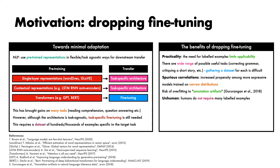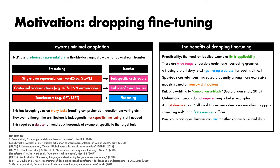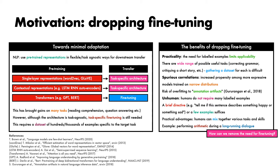A third observation is that humans typically do not learn tasks by seeing large numbers of labelled examples. In many cases, a brief directive in natural language such as "tell me if this sentence describes something happy or something sad", or providing a tiny number of examples, suffices for a human to do the task reasonably. This kind of adaptability has clear practical advantages, since it allows humans to mix together various tasks and skills, such as doing some mental arithmetic in the middle of a long-running dialogue. These observations naturally prompt the question: how can we remove the need for fine-tuning from our language models?